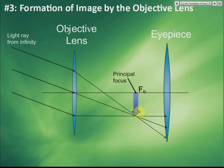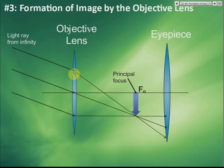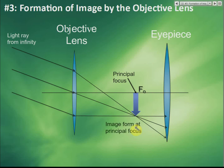In an exam, they may ask you to draw a ray diagram. For an astronomical telescope, the light rays are from infinity, so you draw parallel rays — not necessarily parallel to the principal axis. Draw three parallel rays; they focus at the principal focus, forming the image of the objective lens. This image is then used as the object for the eyepiece.